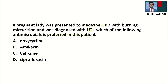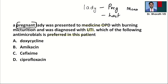First of all, please understand that in the exam, if they give a lady, check in the question whether they have given a woman who is pregnant, lactating, or menopausal. This is a pregnant lady, so we should be very careful when we give the drug. This pregnant lady is having a urinary tract infection. The options are: A - doxycycline, B - amikacin, C - cefixime, D - ciprofloxacin. Try to answer this.